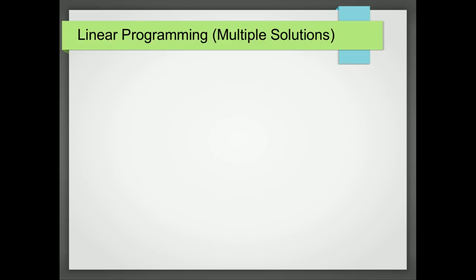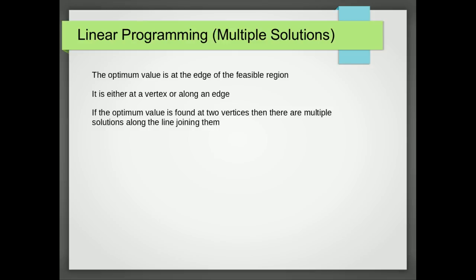Sometimes, though, there will be two vertices which are adjacent to each other that give that optimum value. If that happens, the optimum value can be found anywhere along the line joining those two vertices. So the optimum value is at an edge of the feasible region, either at a vertex or along an edge. If the optimum value is found at two vertices, then there are multiple solutions along the line joining them.